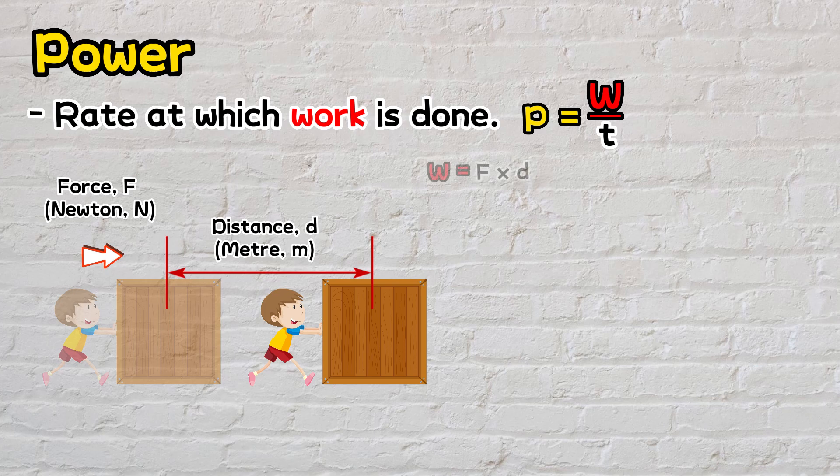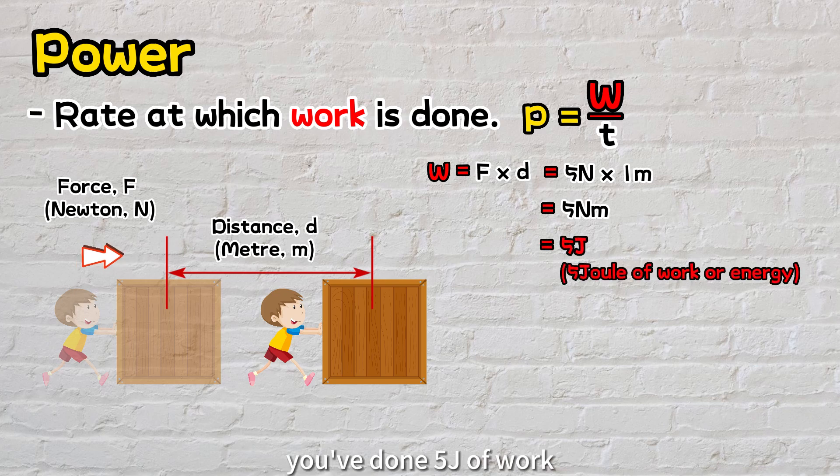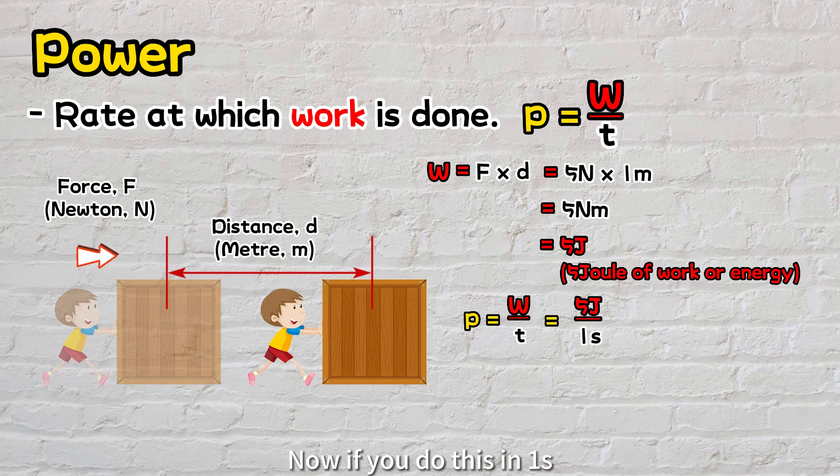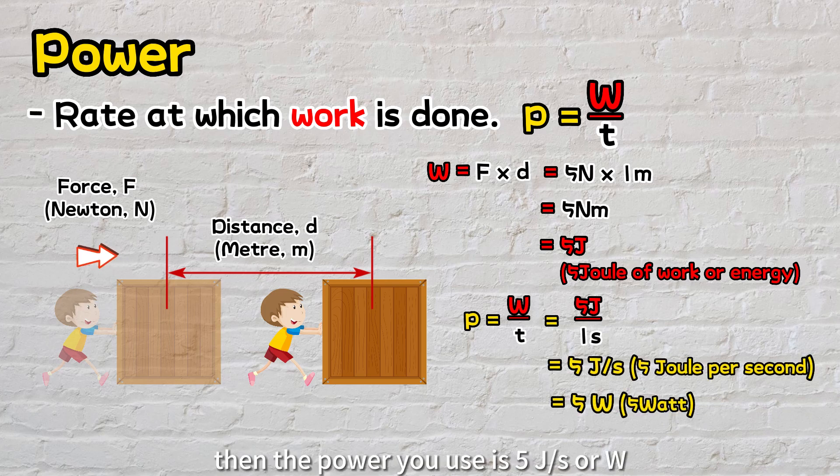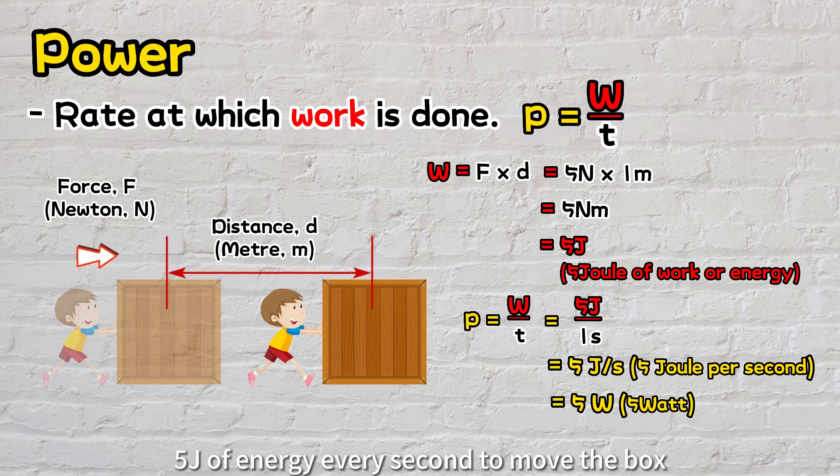For example, if you push with a force of 5 newtons and move the box 1 meter, you've done 5 joules of work. Now if you do this in 1 second, then the power you use is 5 joules per second, or watts. It means you're using 5 joules of energy every second to move the box.